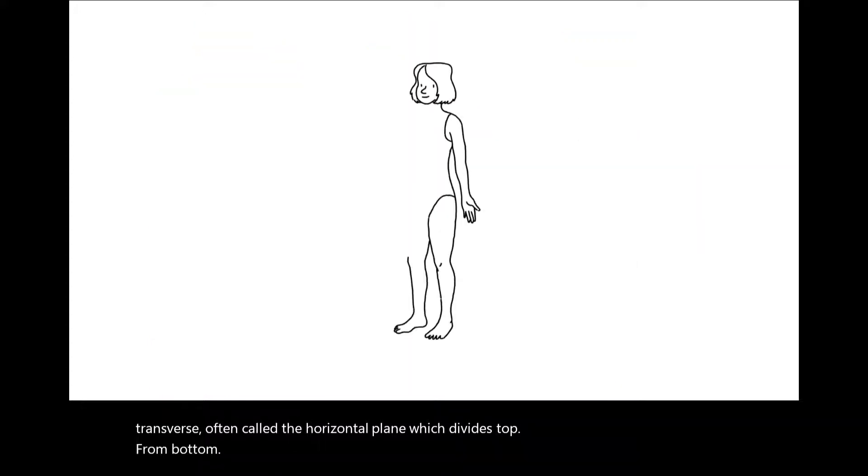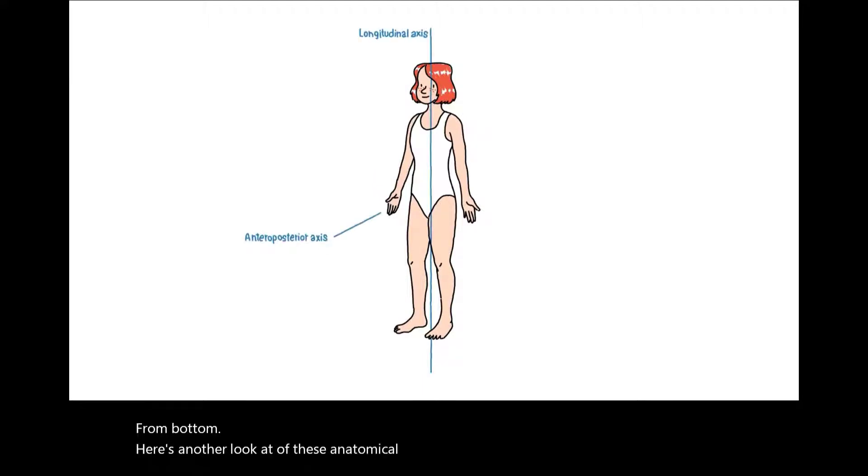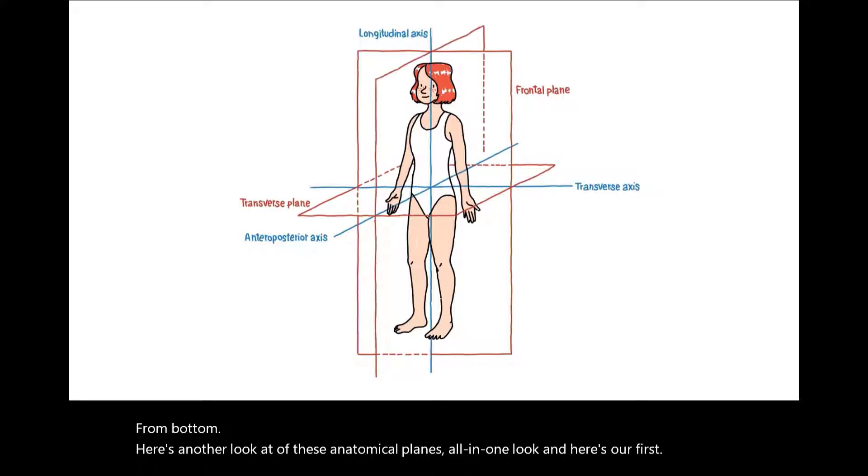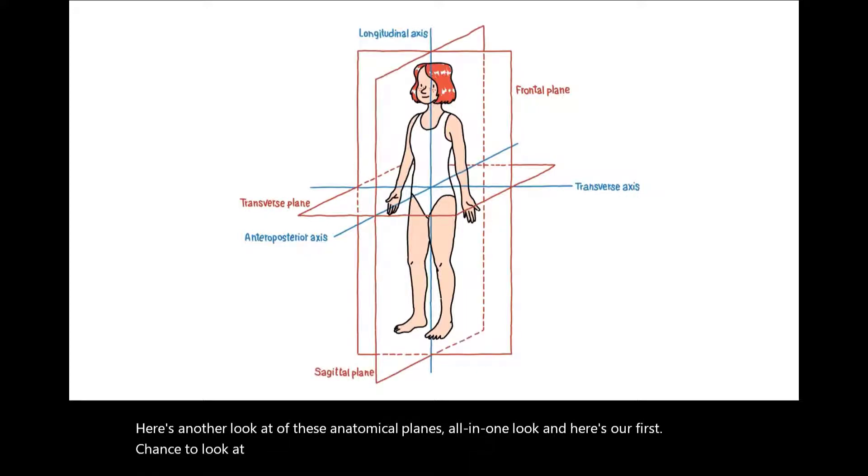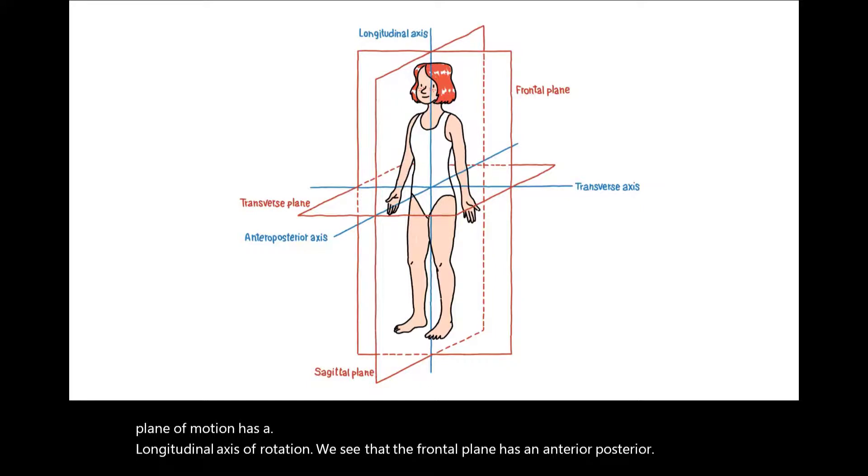Here's another look at each of these anatomical planes all in one look. And here's our first chance to look at the axes of these different planes of motion. We can see that the transverse plane of motion has a longitudinal axis of rotation. The frontal plane has an anterior-posterior axis of rotation.